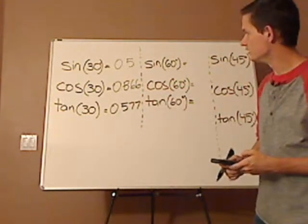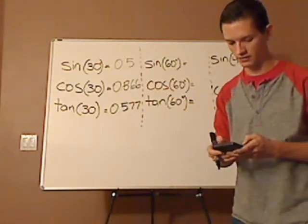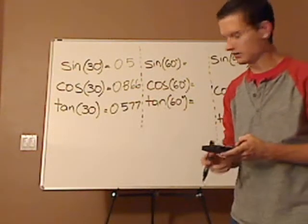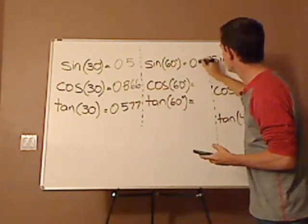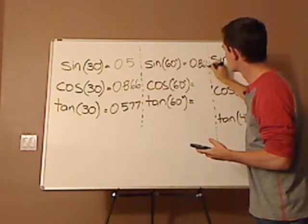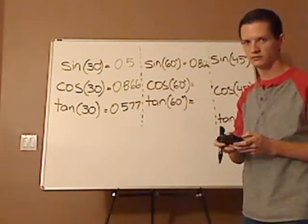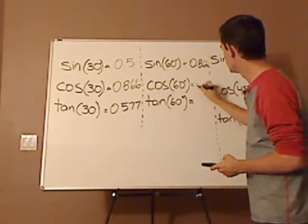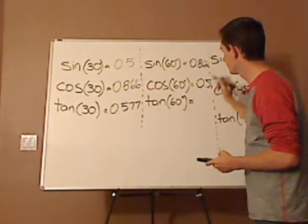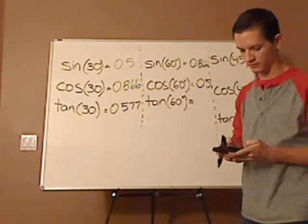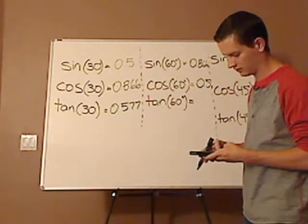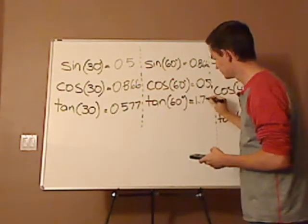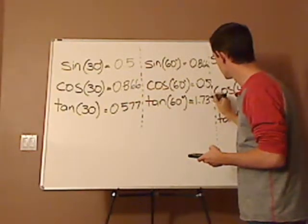Now, what is sine of 60 degrees? 0.866. And then cosine of 60 degrees is 0.5. And what is tan of 60 degrees? 1.732.